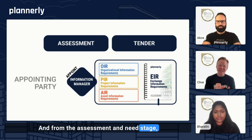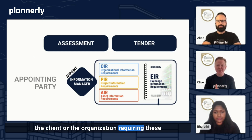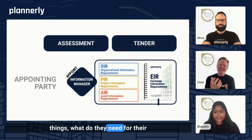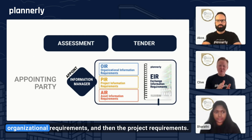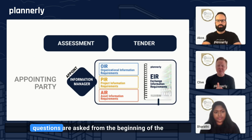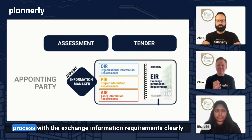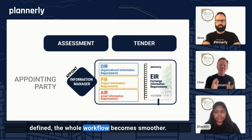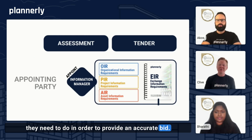The standard provides a structured framework to ensure that you gather the right information from the start. From the assessment and need stage, it helps us define what information the client or organization needs for their decision making, establishing the OIR — the organizational requirements — and then the project requirements, making sure the right questions are asked from the beginning. And going through the invitation to tender process with the exchange information requirements clearly defined, teams know exactly what is in scope and what they need to do to provide an accurate bid.